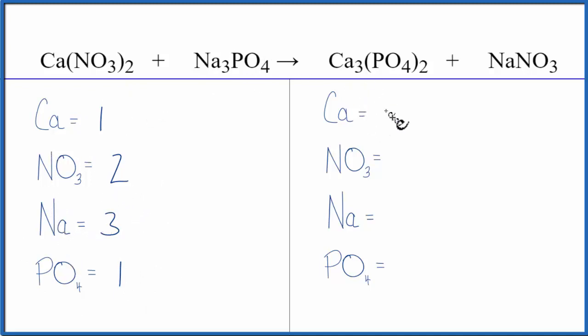On the product side, we have three calcium, one nitrate, one sodium, and two of these phosphate ions.